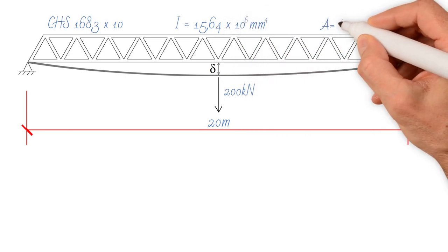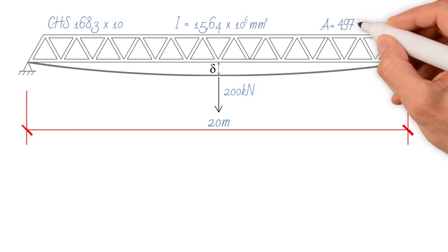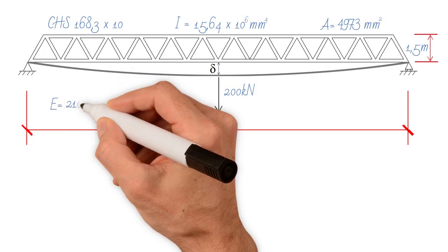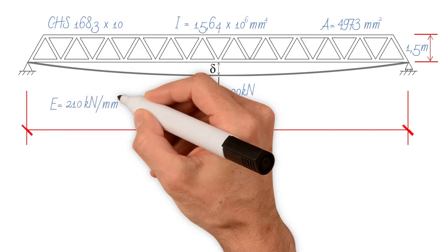and area equal to 4973 millimeters squared. Young's modulus of steel 210 kN per millimeter squared.